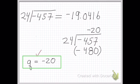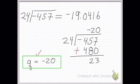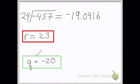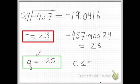So our quotient q equals negative 20. We set that up: 24 goes into negative 457 negative 20 times. We multiply negative 20 by 24 to get negative 480, and we subtract those two numbers. A negative minus a negative equals a positive, so we end up with negative 457 plus 480, giving a remainder of 23. So r equals 23, and negative 457 mod 24 equals 23. Recall that r is greater than or equal to 0 and less than 24.